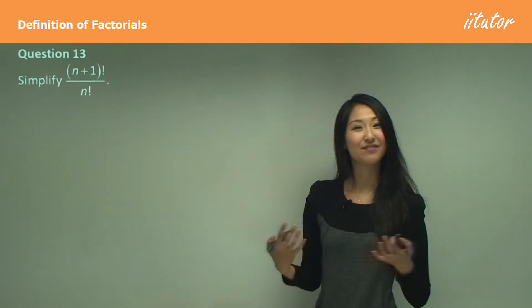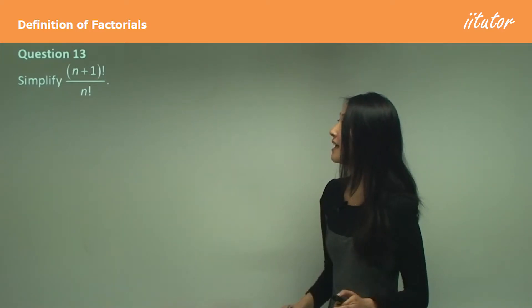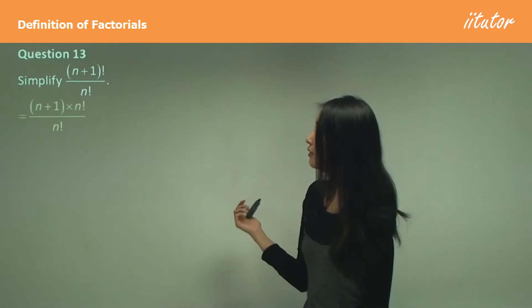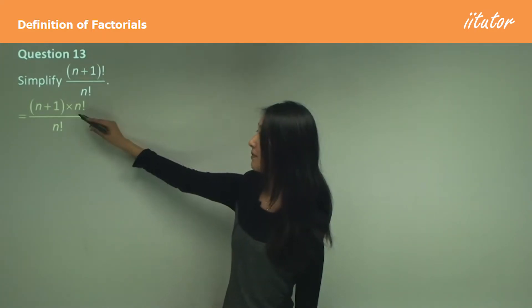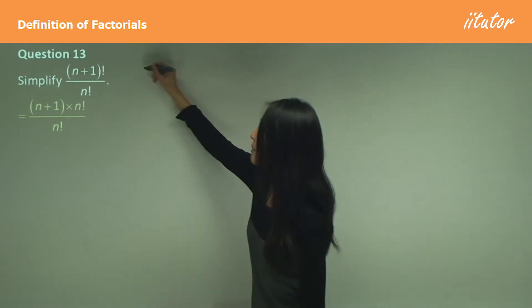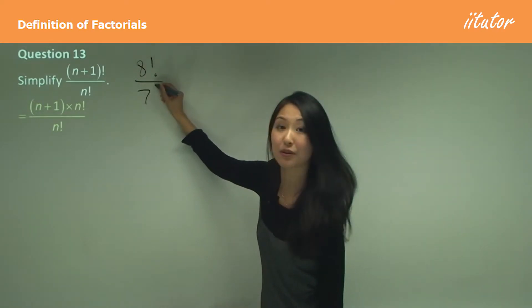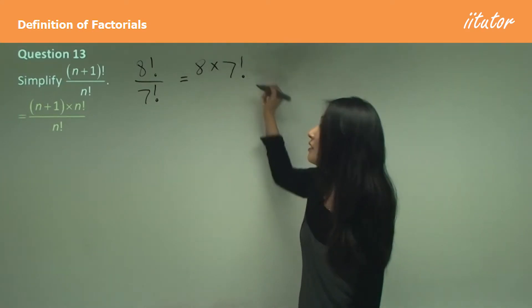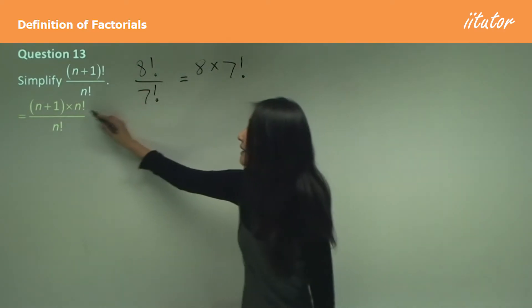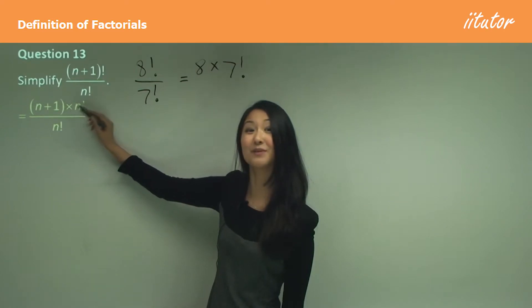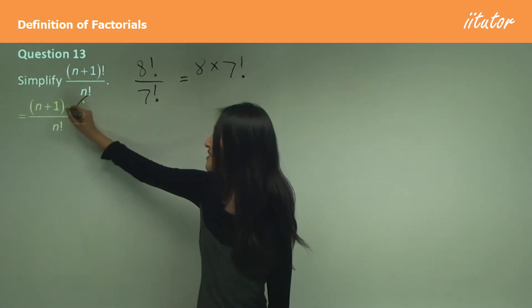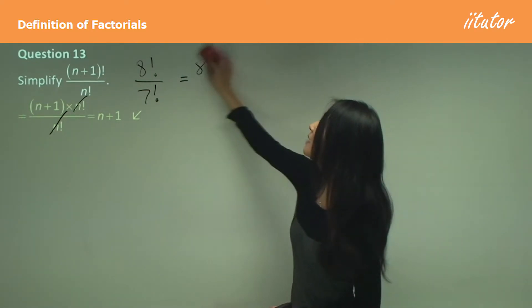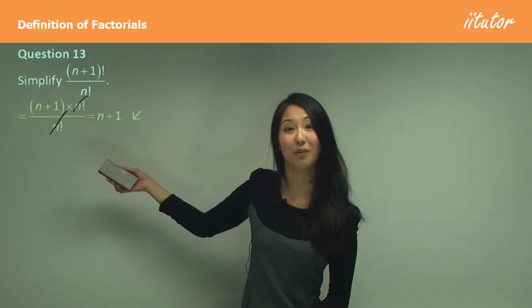It gets a little harder when working with n instead of numbers, but the concept is the same. Question 13: simplify (n+1) factorial over n factorial. Rewrite (n+1) factorial as (n+1) times n factorial — just as we changed 8 factorial to 8 times 7 factorial. Then cancel the n factorials, leaving n+1 as the answer. If the n's are confusing, substitute a number in to help.